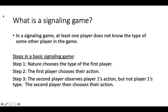In the second step, the first player chooses their action. In step three, the second player learns what the first player did, but not the first player's type. The second player then chooses their action. At this point, the game ends, and both players learn the outcome of the game and their earnings.